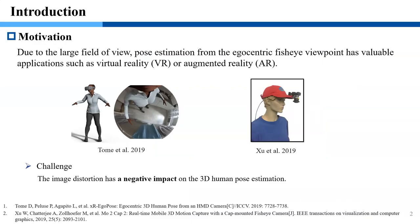Due to the larger field of view, egocentric 3D human pose estimation has valuable applications such as VR and AR. Recent works proposed methods for egocentric 3D human pose estimation from a fisheye camera, aiming at solving self-occlusion problems. However, the negative impact of image distortions on 3D human pose estimation still remains.